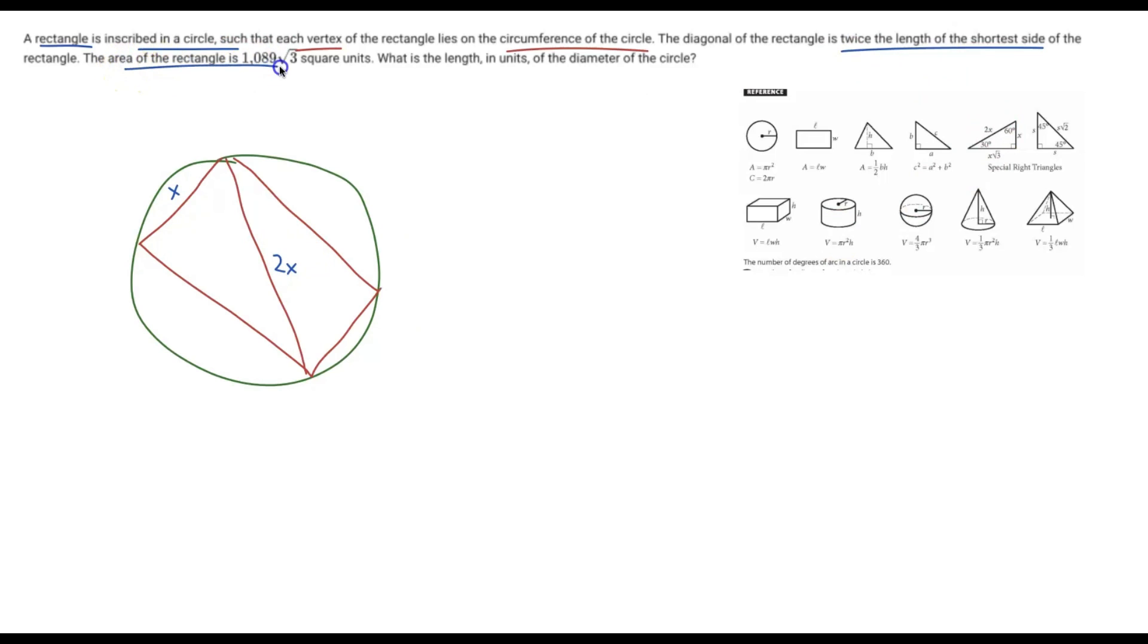The area of the rectangle is 1089 times square root three square units. What is the length in units of the diameter of the circle? All right, so the diameter of the circle is just its radius times two, because that's just from one end of the circumference to the other end of the circle. And you can see that the diagonal actually satisfies that condition, and therefore the diagonal of this rectangle is that diameter of the circle.